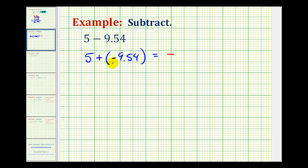The larger absolute value would be the absolute value of negative 9.54, which would be positive 9.54. And then we'll subtract the absolute value of 5, which would just be 5.